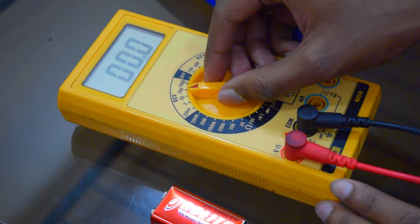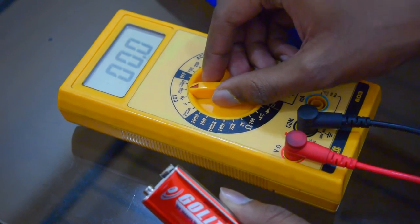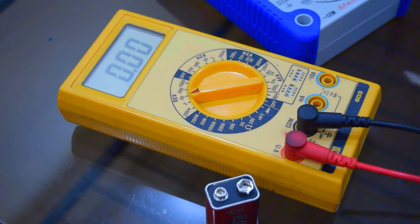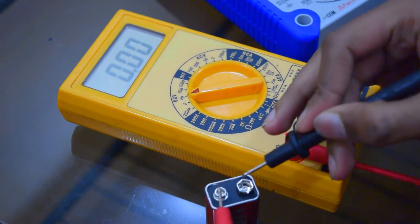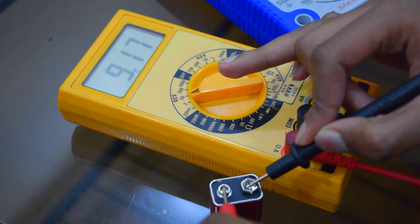Change the range to the appropriate range. Since you're measuring a 9 volt battery, change the range to 20 volts. You can see it's indicating 9 volts.